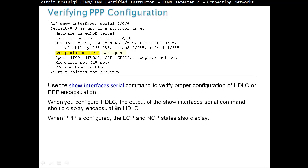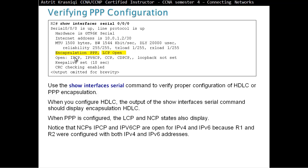When you configure HDLC, the output will show the serial command encapsulation HDLC. For PPP, we can see that LCP has opened the connection and the NCP states also display. We have IPv4 — IPCP — and IPv6 — IPv6CP.